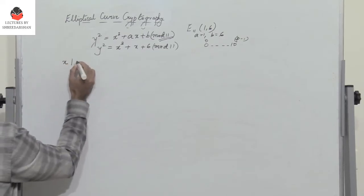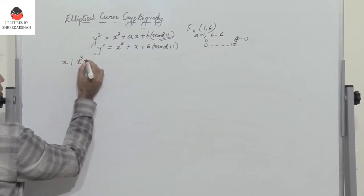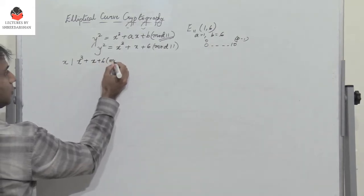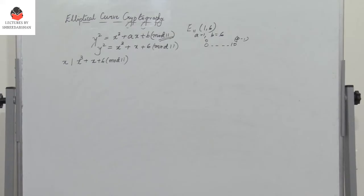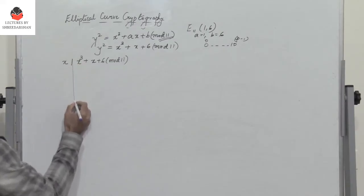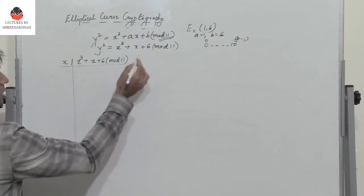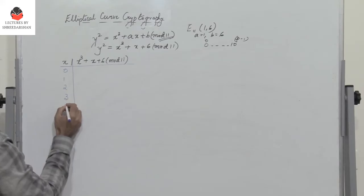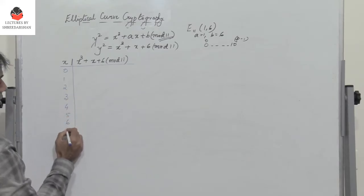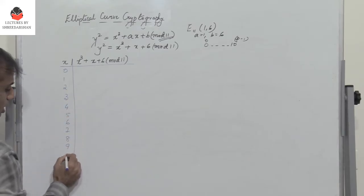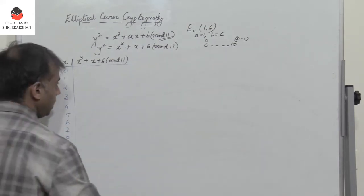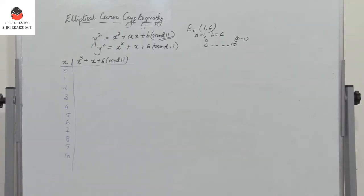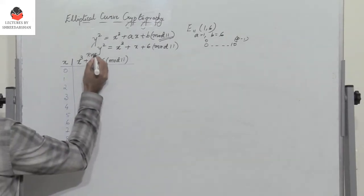Let me consider the RHS: x cubed plus x plus 6. I need to find the values in mod 11. So x can take values 0, 1, 2, 3, 4, 5, 6, 7, 8, 9, 10. I will substitute each value of x, and this gives me the RHS value. When I substitute x=0, I get 6. For x=1, 1 plus 1 plus 6 is 8. For x=2, I get 8 plus 2 which is 10 plus 6 = 16, and 16 mod 11 is 5.